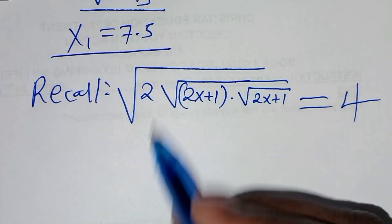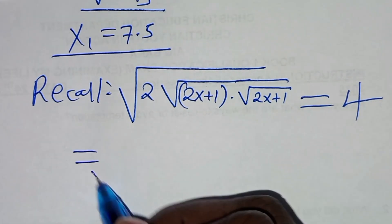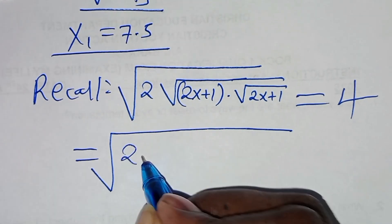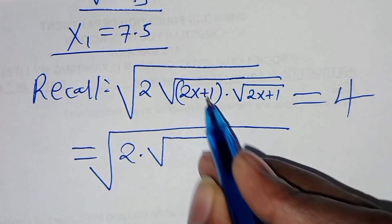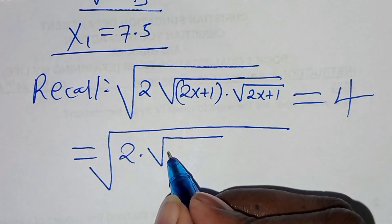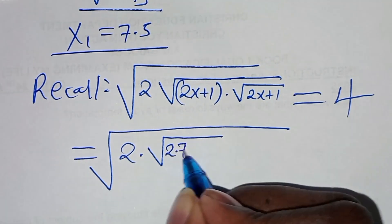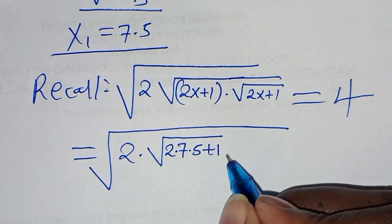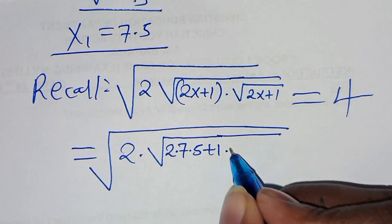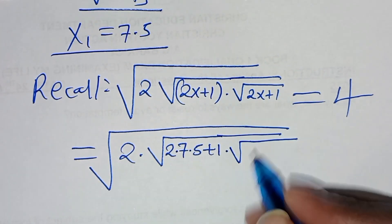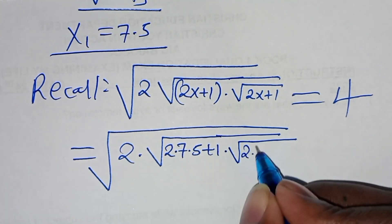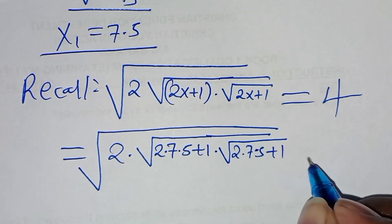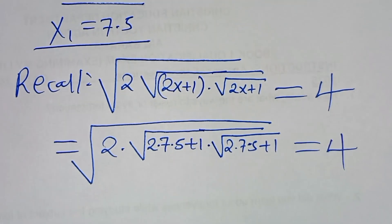Let's substitute the value of x, so that we have square root of 2 times square root of 2 times 7.5 plus 1, then multiplied by square root of 2 times 7.5 plus 1. This should give us a value of 4.